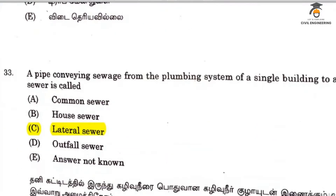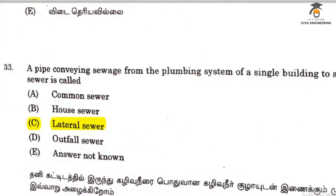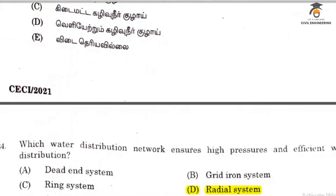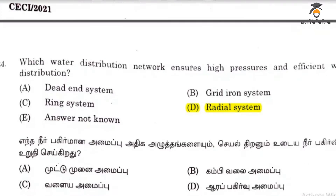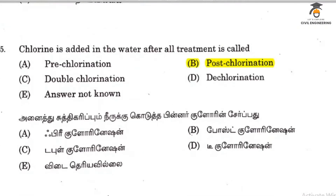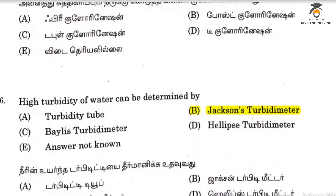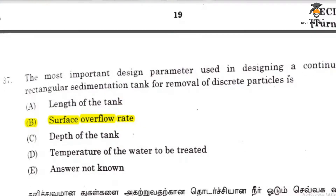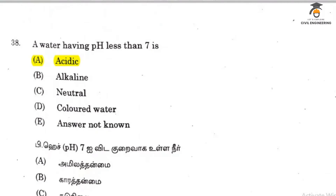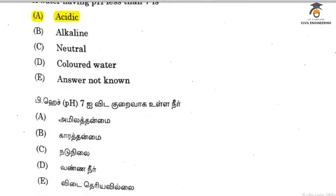The pipe conveying sewage from the plumbing system of a building to a common sewer is a lateral sewer. The water distribution network that ensures high pressure and efficient distribution is the radial system, option D. Chlorine added to water after all treatment is post-chlorination. High turbidity of water can be determined by a Jackson turbidimeter.